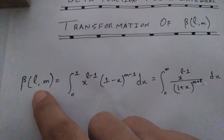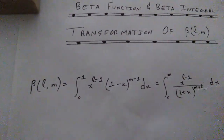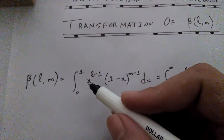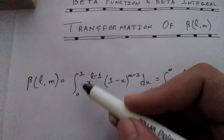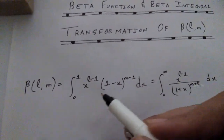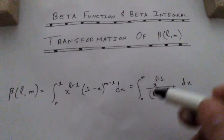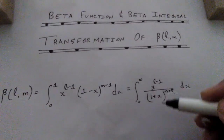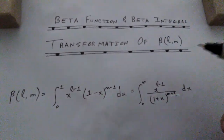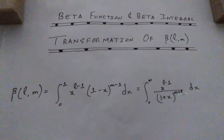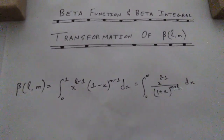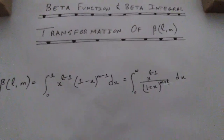We know that the beta function of l and m, which are two positive real values, is defined by means of a definite integral having limits zero to one — that is why we call it the beta integral. This integral can be transformed into another integral with limits converted from zero-to-one into zero-to-infinity. In this video we are going to understand this transformation more deeply.